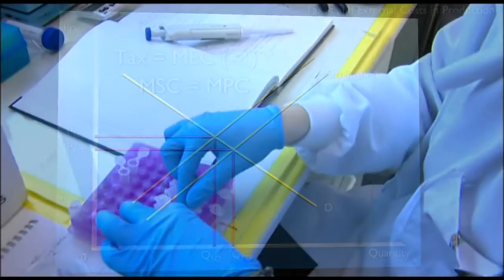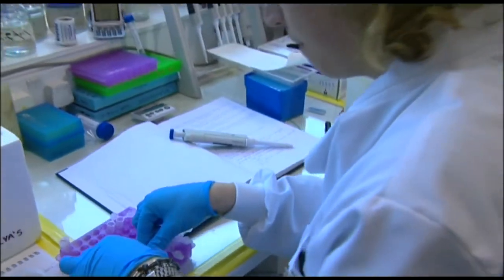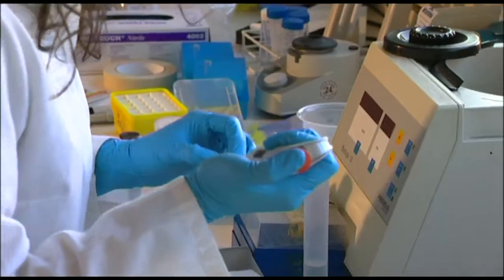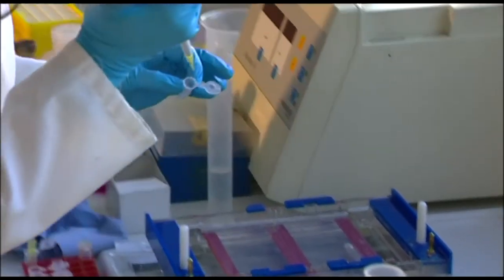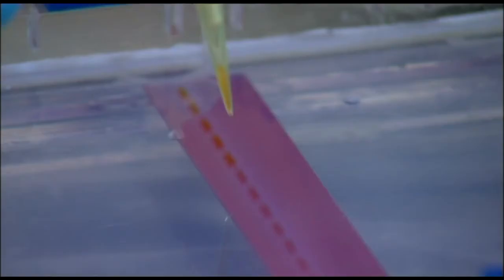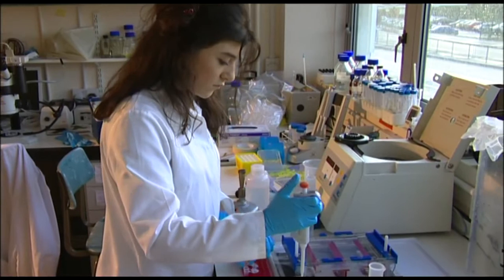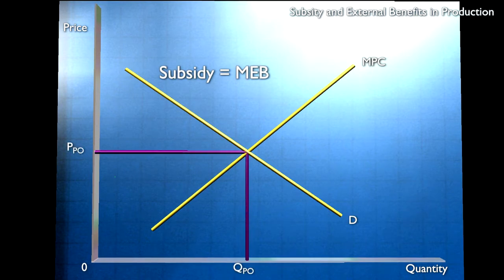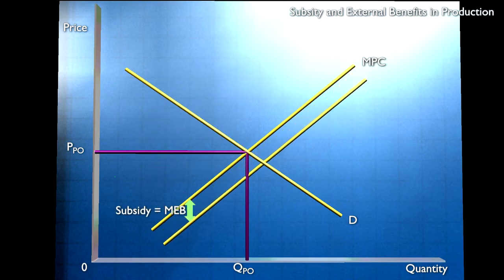Now we can consider what happens when there are external benefits in production. Here the marginal external benefit leads to marginal social cost being less than marginal private cost, and this has led to the situation in which we have too little output in order to maximise social welfare. The logic is then to give a subsidy to producers equal to the marginal external benefit. That reduces production costs and shifts the supply curve down until it coincides with the marginal social cost.